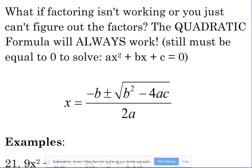But it still has to be equal to zero to solve. Just as a reminder, here's your standard form: ax squared plus bx plus c equals zero. There's your standard form. A is the coefficient with the x squared.